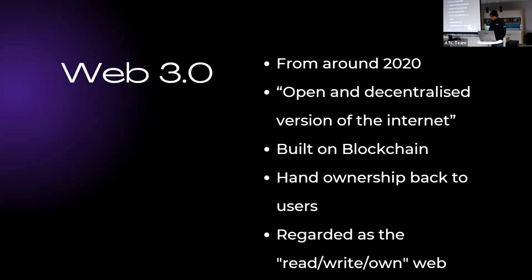This is what Web 3.0 attempts to solve. The concept of Web 3.0 first came up around 2014 when one of the creators of Ethereum, Gavin Wood, coined the term in a blog post and envisioned it as an open and decentralized version of the internet. Web 3.0 is built on blockchain, which is essentially a decentralized network of many peer-to-peer nodes that allows computers to communicate without a middleman. This promises to hand back ownership of data to the creators, as there would be no need for a single authority over their data. This stage of the internet is therefore commonly regarded as the read, write, and own web.